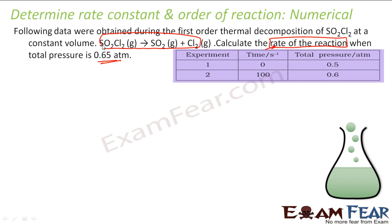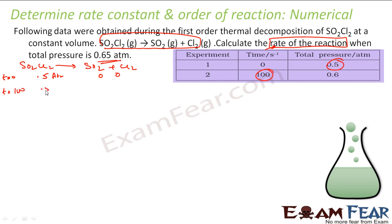SO2Cl2 decomposes into SO2 and Cl2 gas. At T=0, the total pressure is 0.5 atm, and the pressures of SO2 and Cl2 are both 0. At time T=100s, if X pressure is lost from SO2Cl2, then SO2Cl2 becomes 0.5−X, SO2 becomes X, and Cl2 becomes X. Adding these up: total pressure = (0.5−X) + X + X.